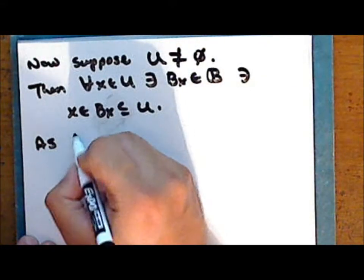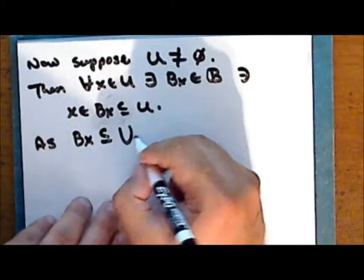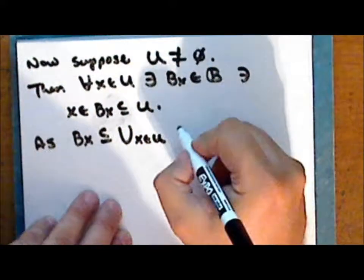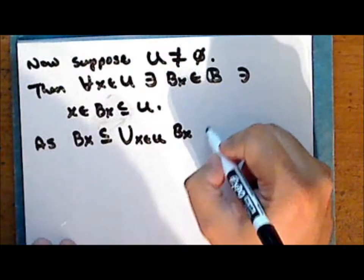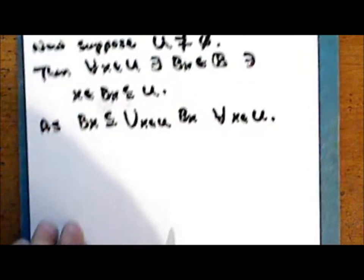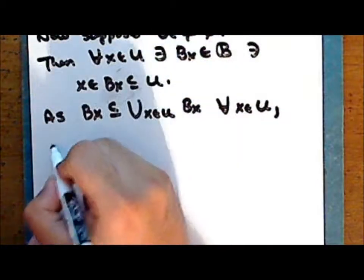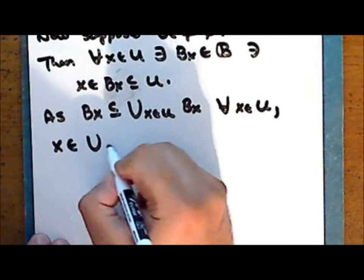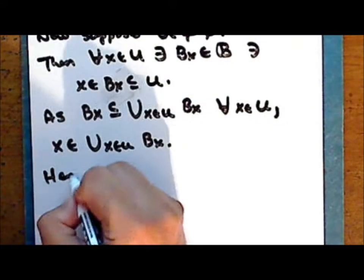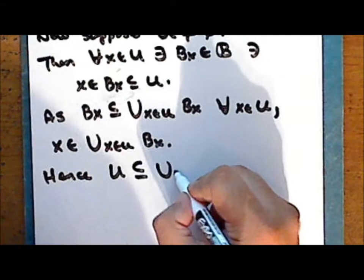Now, as each element B_x is a subset of the union of all such elements — indexed by x in the set U — and this is true for every point x in U, we have that every point is in this union, and hence the set U is a subset of this union.